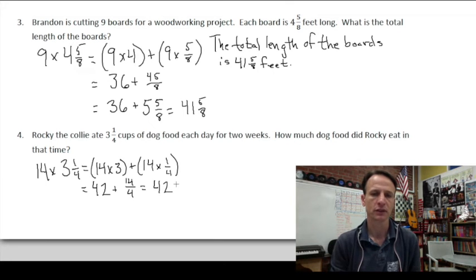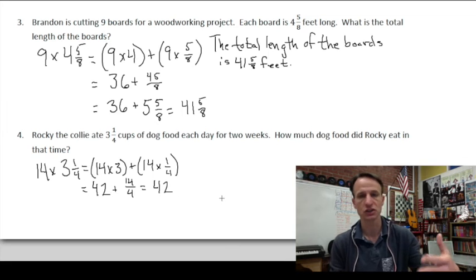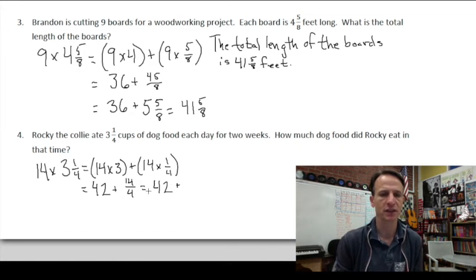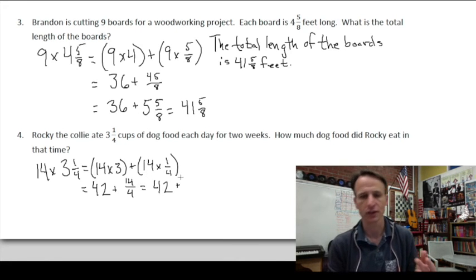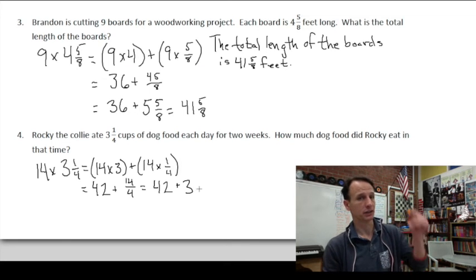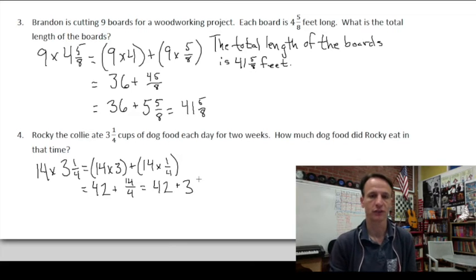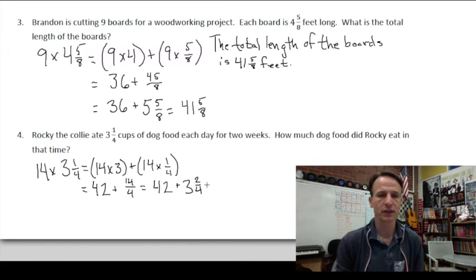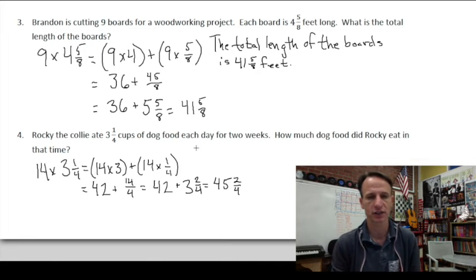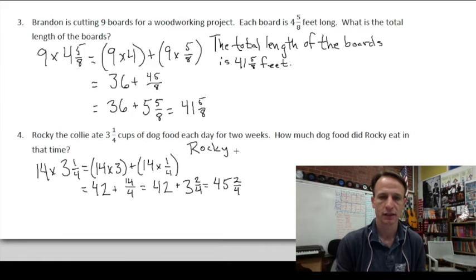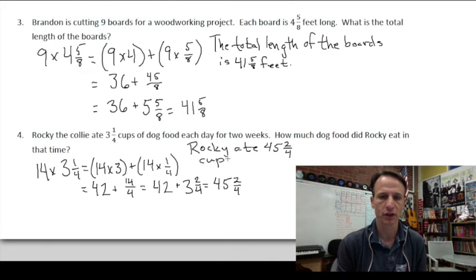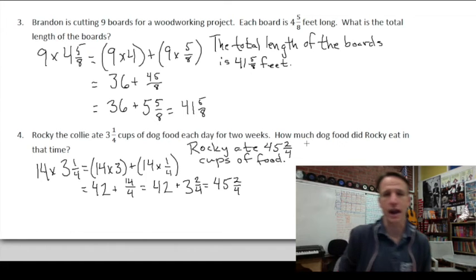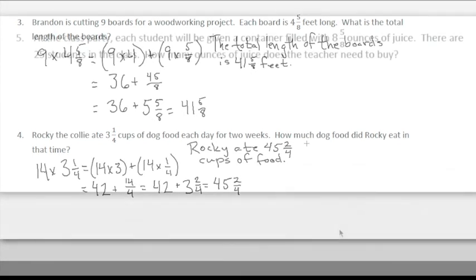Leaving the 42, how many fours in 14? Four, eight, twelve — 16 is too many, so there are three fours because three times four is 12. Then 14 minus 12 leaves two-fourths. Combining: 42 plus three is 45 and two-fourths. Rocky the hungry collie ate 45 and two-fourths cups of food.